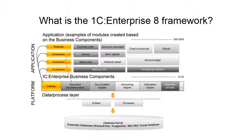The calculation engine handles payroll calculations. The business process engine is used throughout the system. Using the business components significantly reduces the cost of enterprise application development, since it allows the company to focus solely on implementing its specific business processes rather than building basic business functionality from scratch.